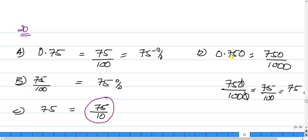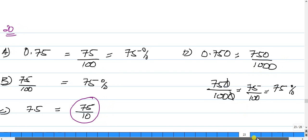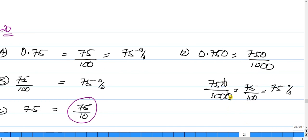0.750 is 750 over 1,000. And if we're going to cancel a zero here, or divide the numerator and denominator by 10, I end up with 75 out of 100.